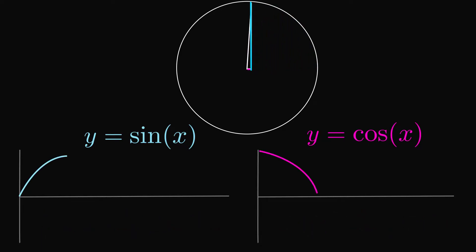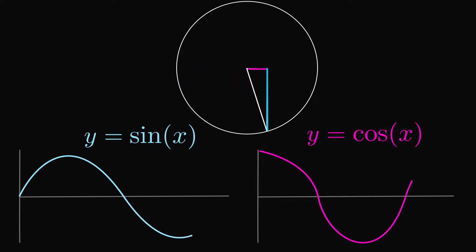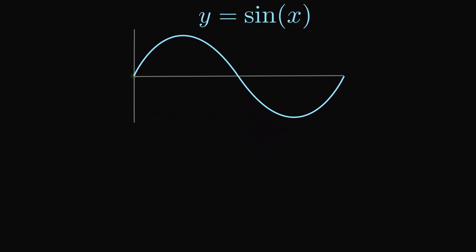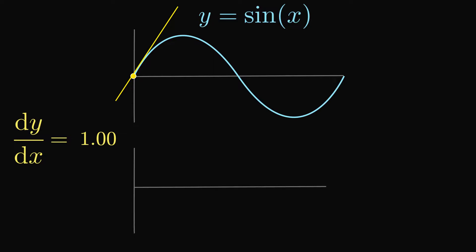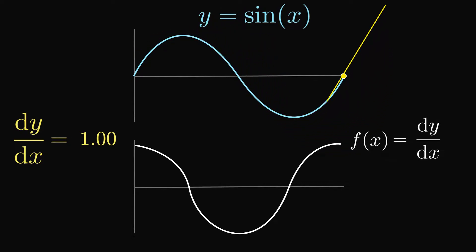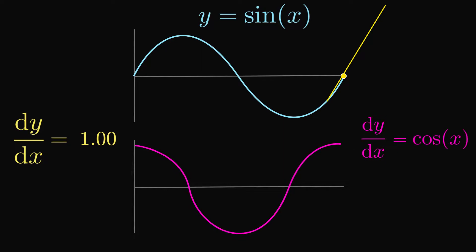Plotting the values of the lengths of the two sides gives us our famous sine and cosine graphs. Let's focus on y equals sine x — the yellow line shown is the gradient at the yellow point. Plotting the values of the gradient of sine x, we see that the resulting function is dy/dx, and this function is our original cosine function. So quite beautifully, the derivative of sine x is cosine x.